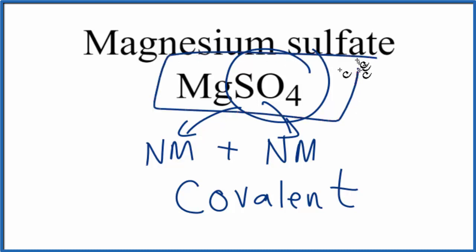But overall, because we have the positively charged magnesium ion and negatively charged sulfate ion, they're attracted to form the ionic bond. Overall, magnesium sulfate is an ionic compound. This is Dr. B. and thanks for watching.